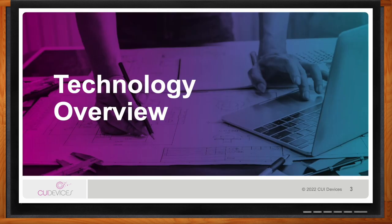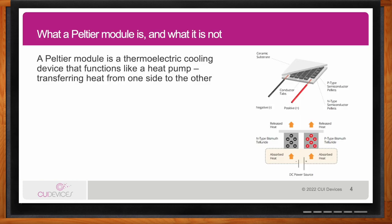A Peltier module is a thermoelectric cooling device that functions like a heat pump, essentially transferring heat from one side and expunging it to the other — also known as pulling heat out of one location and moving it to a different location. They're packed full of thermocouples, which are positive and negative charged semiconductor pellets that, when a current is applied, react together to create cooling and/or heating. The cooling is realized on the ceramic plates that hold the semiconductor pellets in place.